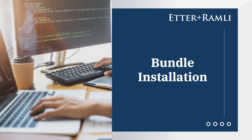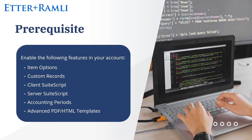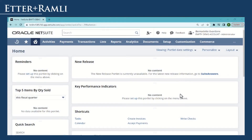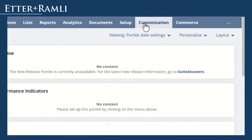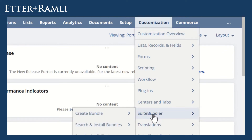Let's start with bundle installation. Here's the list of the required features that must be enabled on your account before we install the bundle. Make sure that they are turned on before you move on to the next step. After enabling the features on your account, we can go ahead and install the bundle. Go to Customization, Suite Bundler, Search and Install Bundles.